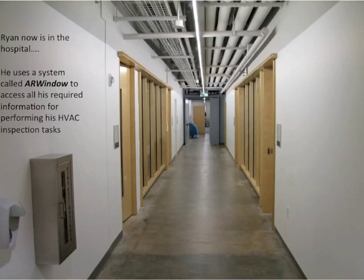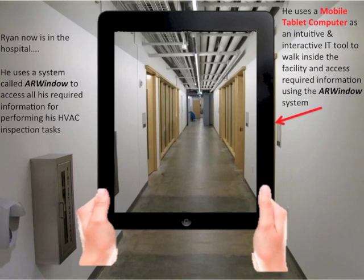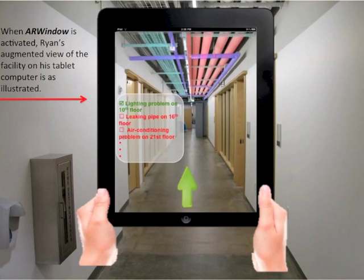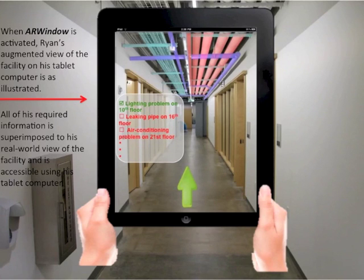Ryan is now in the hospital. He uses a system called AR window to access all his required information for performing his HVAC inspection tasks. He uses a mobile tablet computer as an intuitive and interactive IT tool to walk inside the facility and access required information. This figure shows Ryan's view of the hospital on his mobile tablet computer while AR window is deactivated. When AR window is activated, Ryan's augmented view of the facility on his tablet computer is as illustrated.